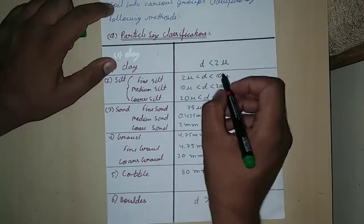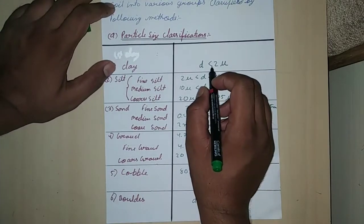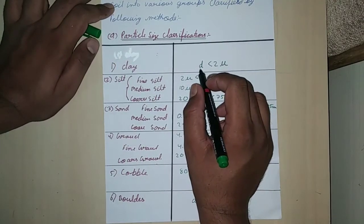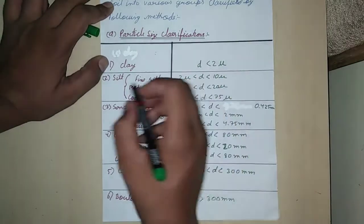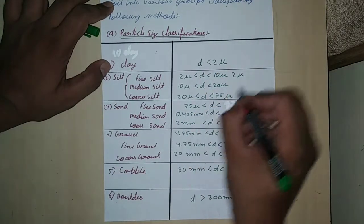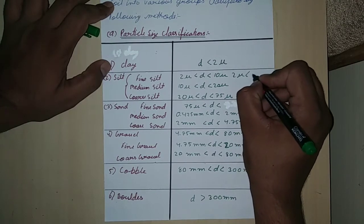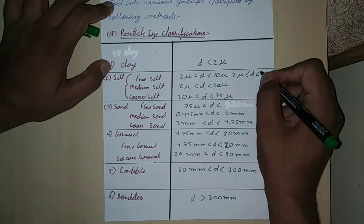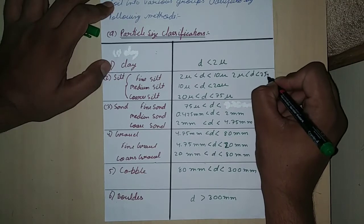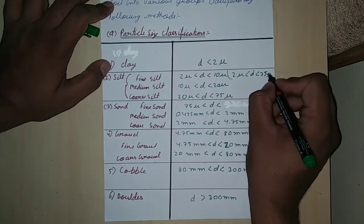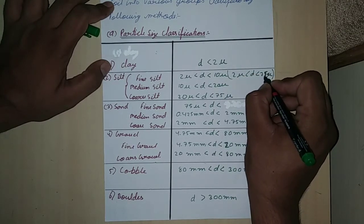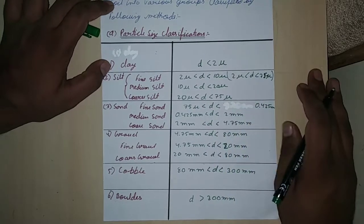Clay particles are 2 microns in diameter. Silt ranges from 2 microns up to 75 microns. This is the region of the silt.